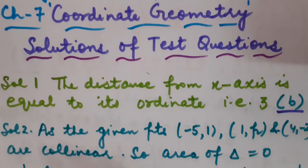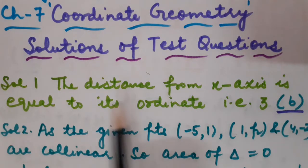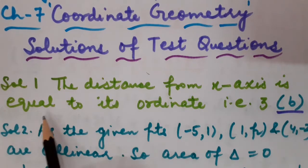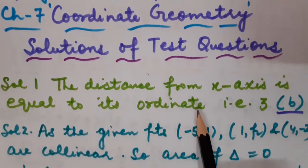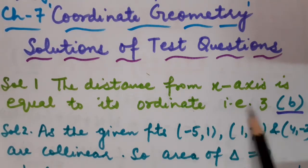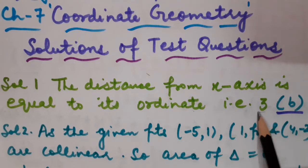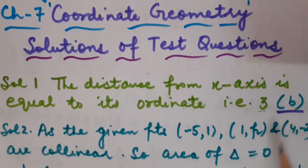The solution is: the distance from the x-axis is equal to its ordinate. So what would be the ordinate? As the point is P with coordinates (2,3), the ordinate is 3. So the right option is option number B.